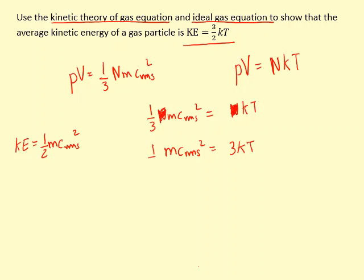To get that expression for kinetic energy, so the kinetic energy of a particle is 3 over 2 kT. Now this is the kinetic energy for only one particle.